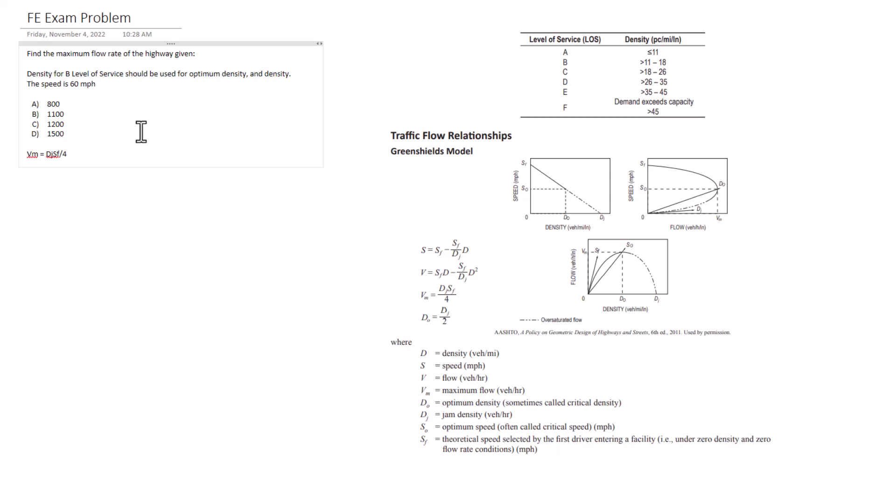And so we need to find some of these other variables here. So now we have standard density, which was listed to be for the level of service of B. So we want the max flow rate, so for level of service we're going to go with 18 as our density here.